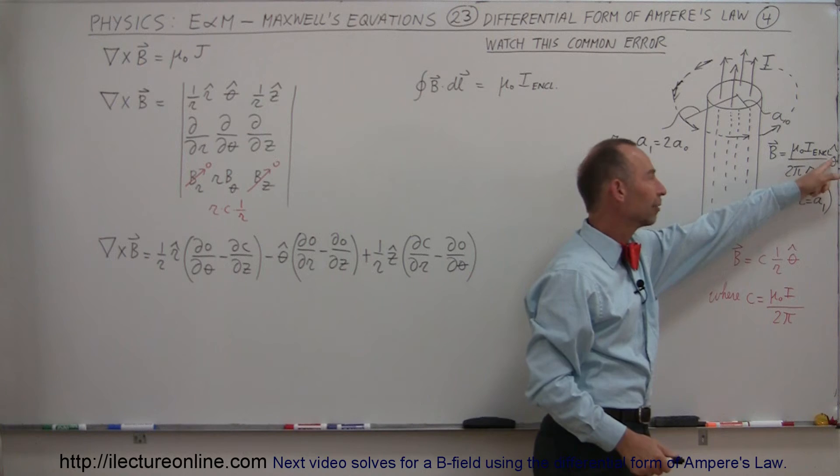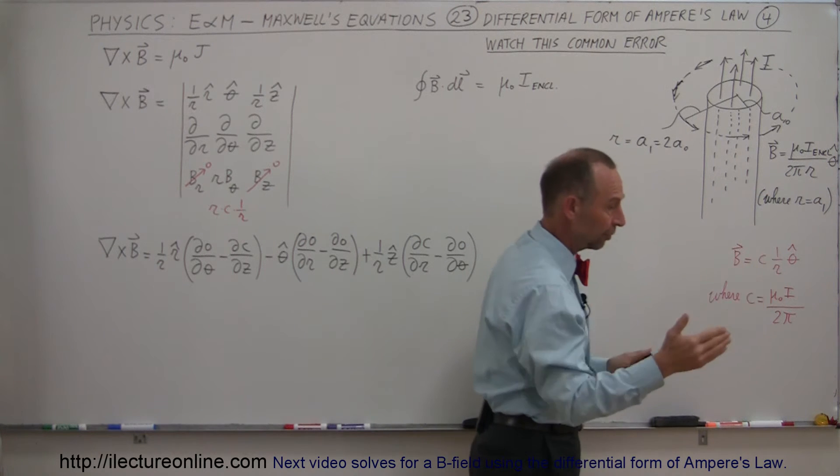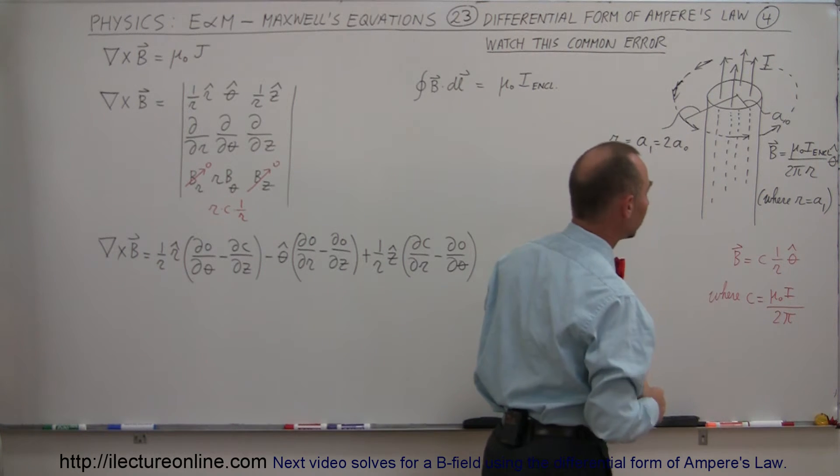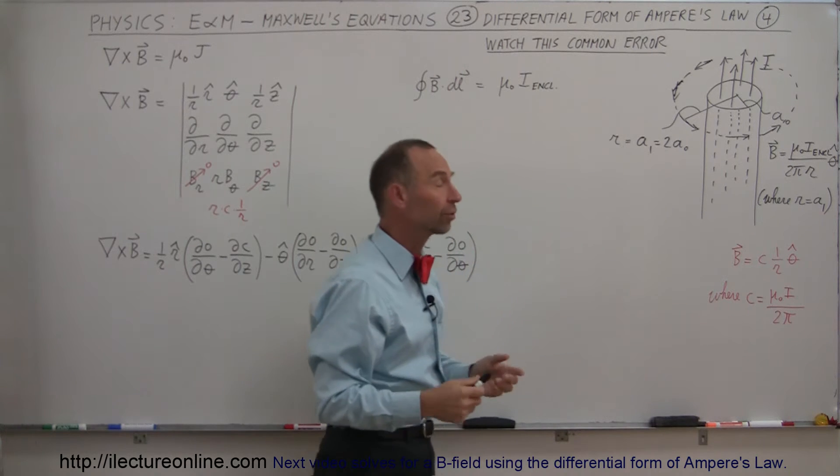Then the equation for the B field is equal to μ₀ times i enclosed divided by 2πr, and of course in the direction in the circle direction, in direction of θ if you look at cylindrical coordinates.